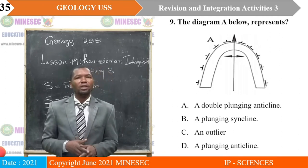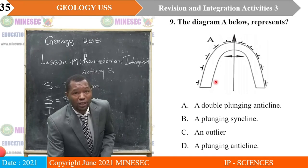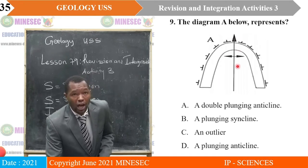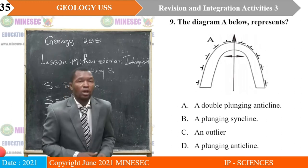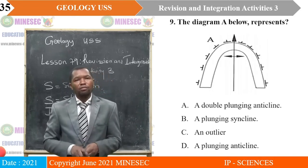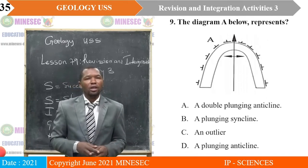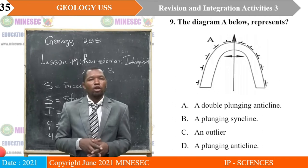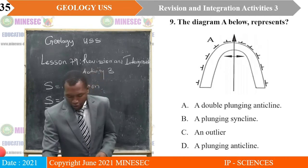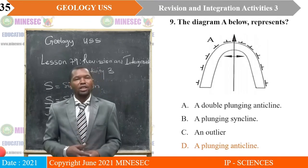Question nine: The diagram A below represents — looking at that diagram, there is a fold axis with dips away and the fold axis has a direction. A — a double plunging anticline; B — a plunging syncline; C — an outwire; D — a plunging anticline. The correct answer is D, a plunging anticline.